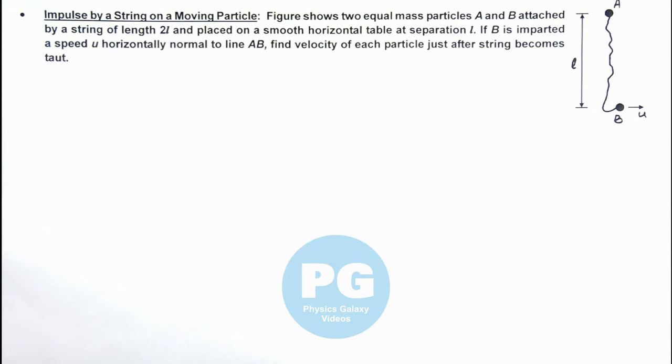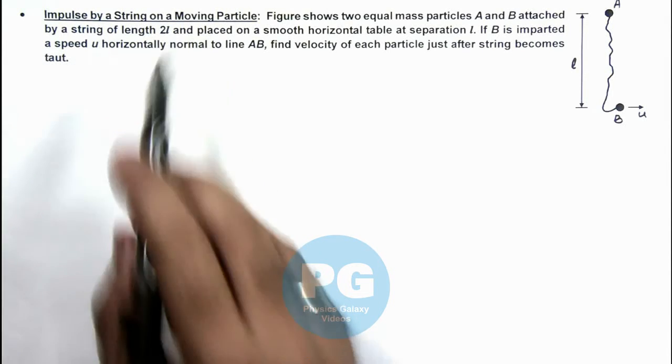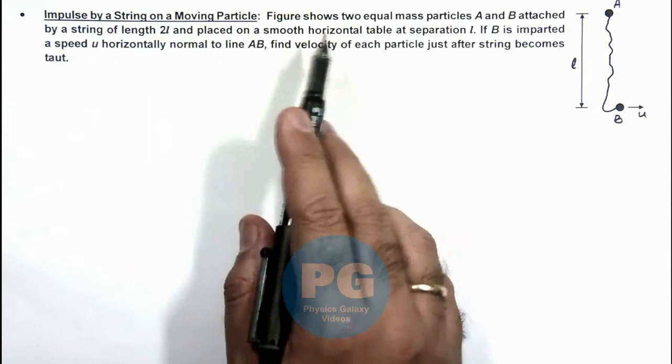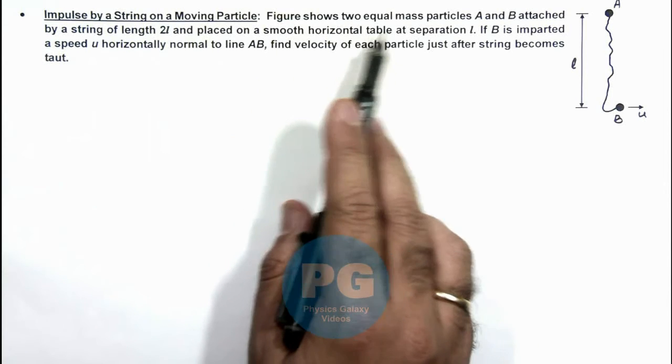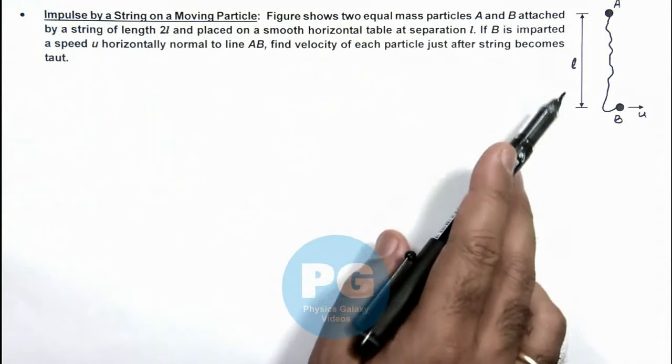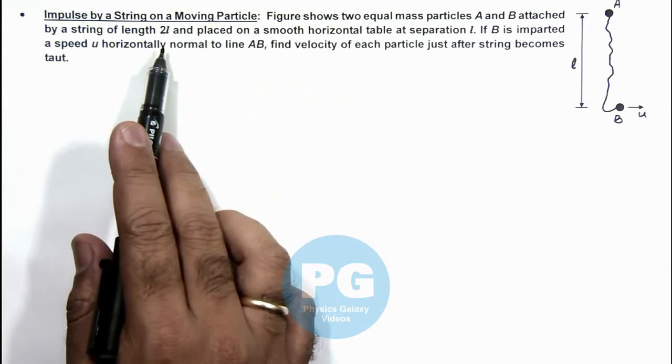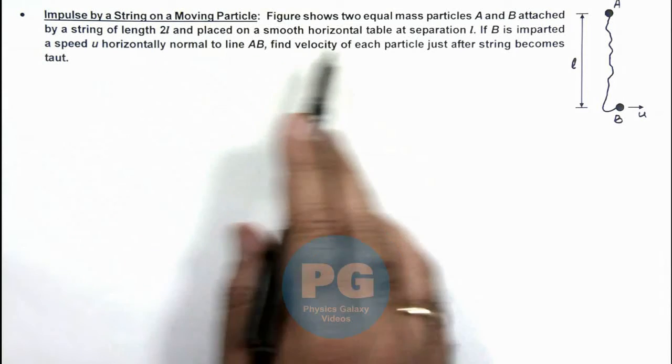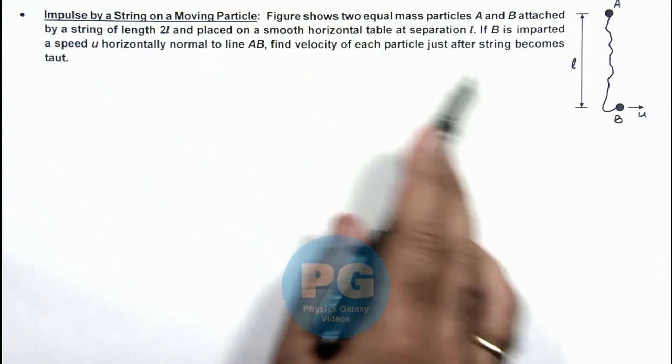In this illustration, we'll study about the impulse by string on a moving particle. Here we are given that the figure shows two equal mass particles A and B attached by string of length 2l and placed on a smooth horizontal table at separation l.